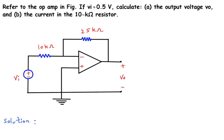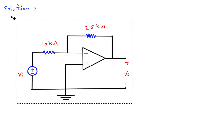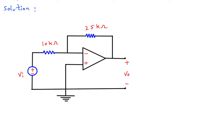First we will redraw the circuit. Now here we can see this is an inverting amplifier. So this is Rf and this is R1. This is Vi and this is Vo.